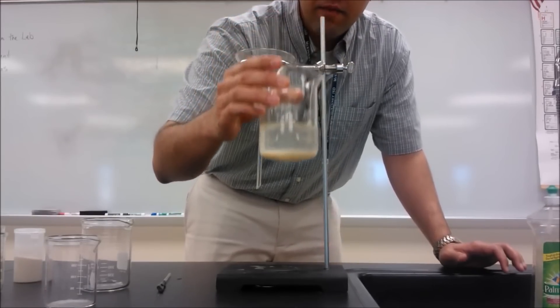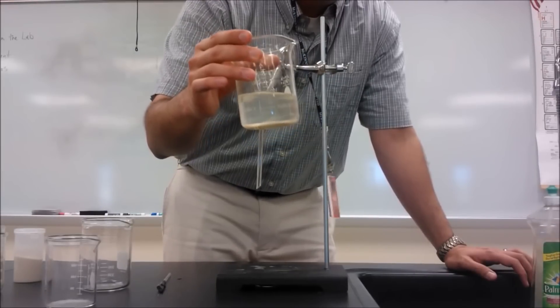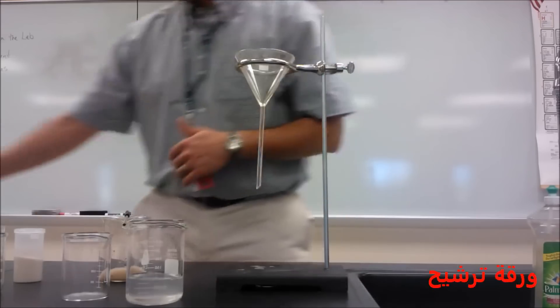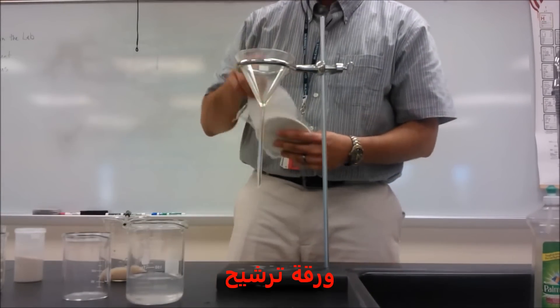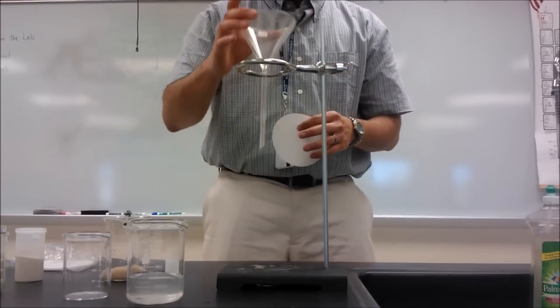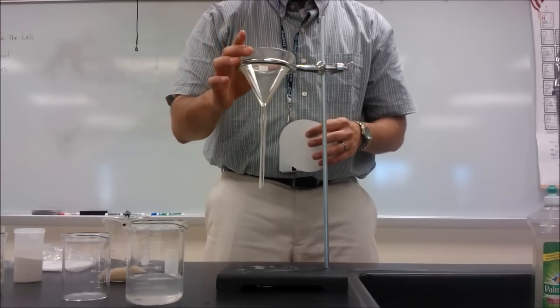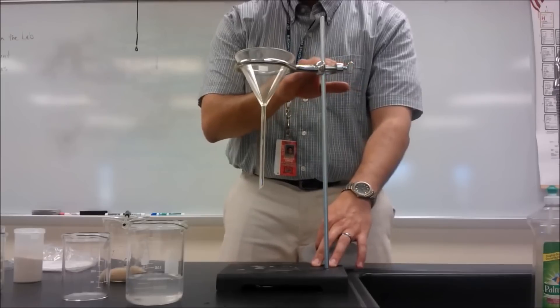So what I'm going to do is the first strategy, the first technique that we can use to separate a solid. To filter, we're going to be using a setup that is going to use some filter paper, and we've got our funnel right here. I've got a glass funnel. Notice that I've got my ring stand with my ring hooked up to it.